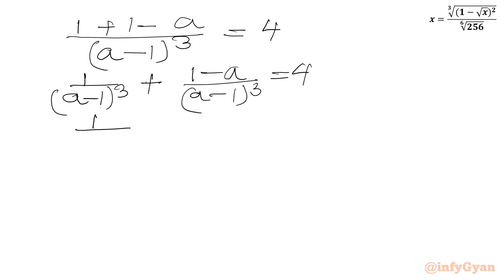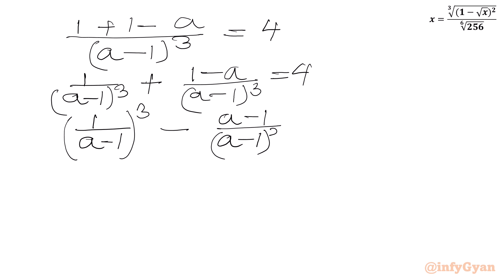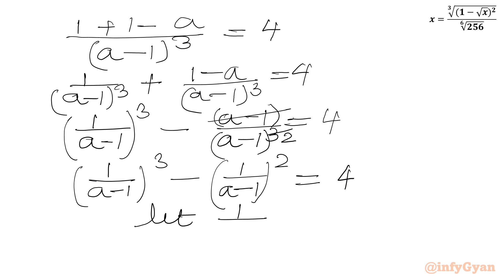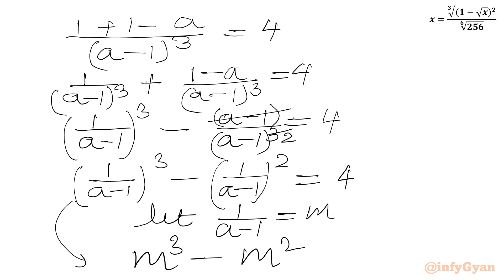We can write this as 1/(a minus 1)³ plus (1 minus a)/(a minus 1)³. The second term simplifies: (1 minus a)/(a minus 1) = -1, so we get 1/(a minus 1)³ minus 1/(a minus 1)² equal to 4. Now let m equal 1/(a minus 1), giving the equation m³ minus m² equal to 4.